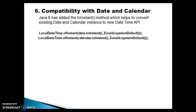We'll learn how we can convert an old Date into a new Date. Basically, Java 8 has added two instant methods which help to convert existing Date and Calendar instances to the new Date-Time API, as you can see on this slide.